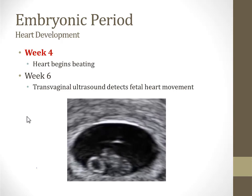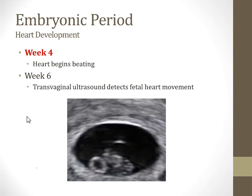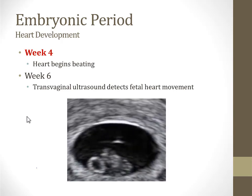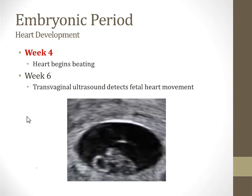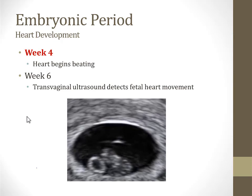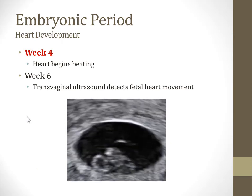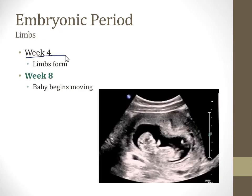In the fourth week after fertilization, the embryo's heart begins beating. In the sixth week, a transvaginal ultrasound can detect fetal movement — you can see the moving structure in the middle of the ultrasound picture, which is the fetal heart beating. Week four is also when the limbs of the baby begin to form, and by week eight you can see the baby moving on ultrasound.